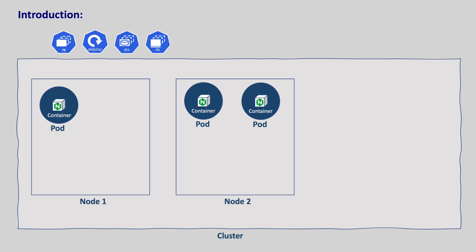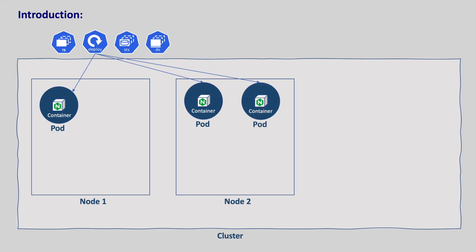These controllers all ensure that their pods are always running. If a pod fails, the controller restarts it or reschedules it to another node to make sure the desired number of pods are always running. But what if we want to run our pods only once, like taking a DB backup or sending emails in a batch? Such processes should not be running continuously — they run for a certain amount of time at particular times, not continuously.